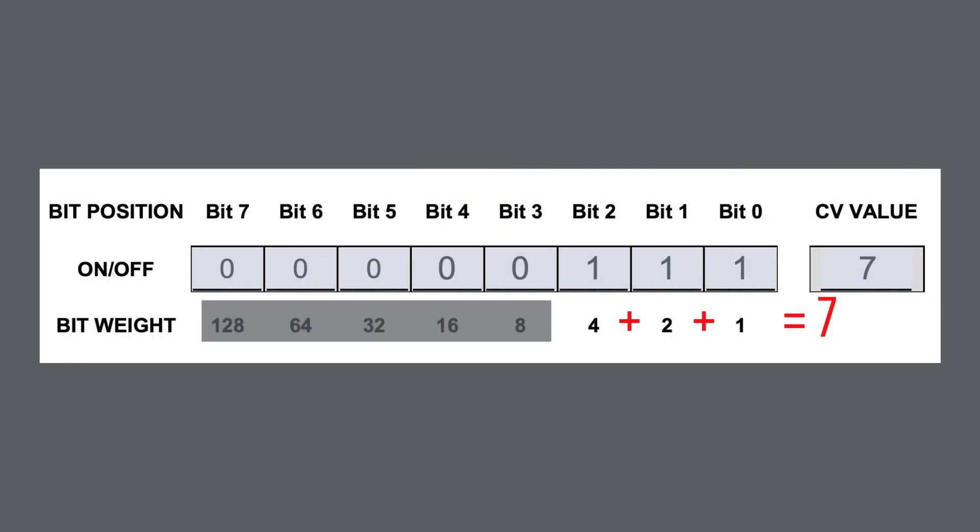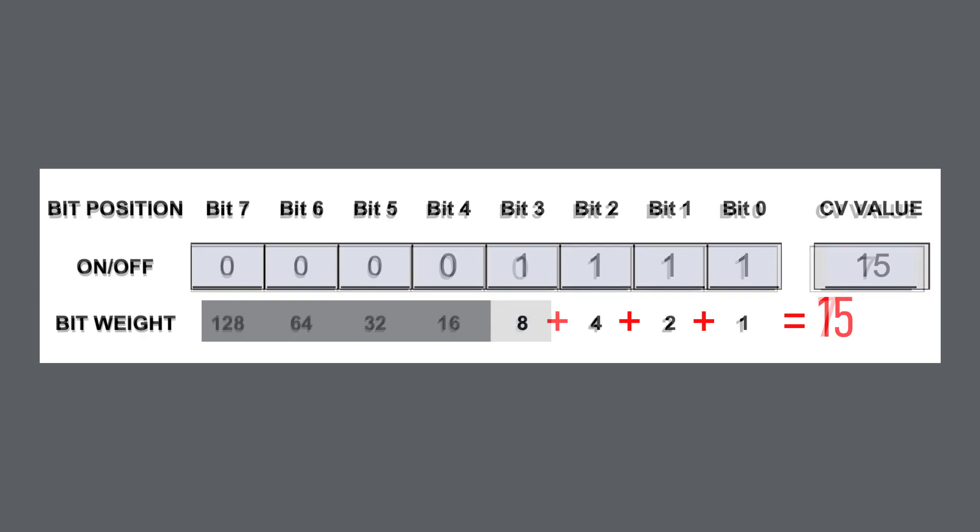Again, every unique value between 0 and 255 can be created. So let's take a look at the value of 8 — bit number 3. When we add up all the numbers below it — 1, 2, and 4 — we get a value of 7, and the next one is a value of 8. That's how we work our way through the math. And then if we add the 8, the highest value we get is a value of 15. This is how the CV structures are done no matter what the case.